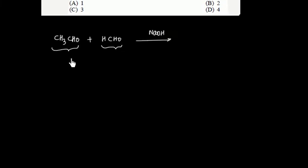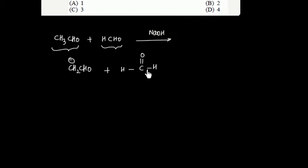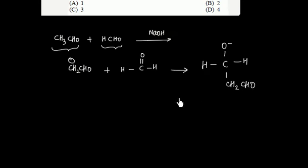Only one type of carbanion is possible here. We can remove the alpha hydrogen from CH₃CHO — formaldehyde does not have an alpha hydrogen. So we generate a carbanion from CH₃CHO, and this carbanion will attack on the formaldehyde. After the attack, we get CH₃CHO⁻–CH₂CHO, and then taking H⁺ from water gives us CH₂OH–CH₂CHO.